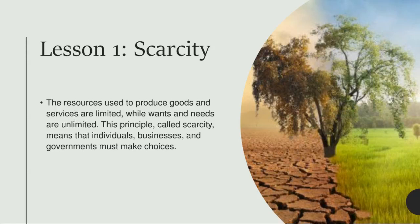Goods are objects like cars and clothes. Services are actions that other people do for others, such as teaching. A shortage is something that occurs when a good or service is unavailable. Shortages occur when people have trouble supplying goods and services at current prices. They may occur because of situations like war or drought, and may end quickly or may last a long time.